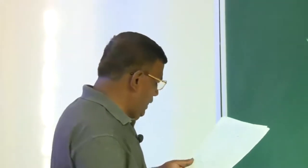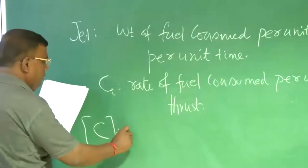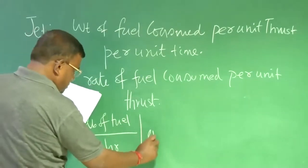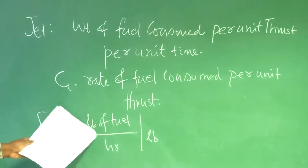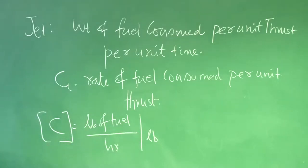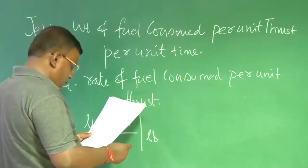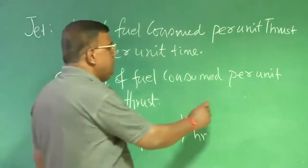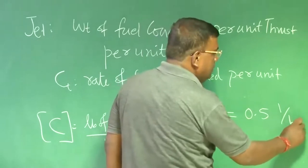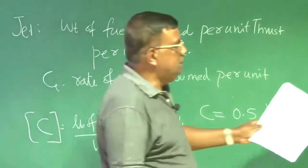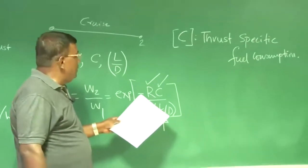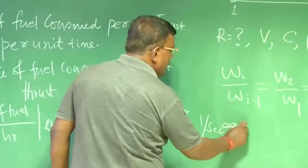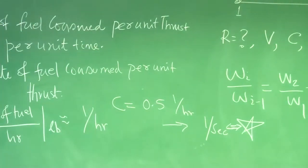You will find most books express C_T in units of pounds of fuel per hour per pound of thrust, which simplifies to units of per hour. For example, the value of C for such cases may be around 0.5 per hour. But when using the range formula, we must be consistent in units, so when working in FPS I must convert C_T into per second. This is very important, and you will see this applied when I solve the example.